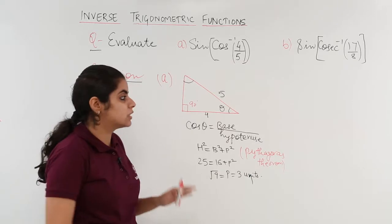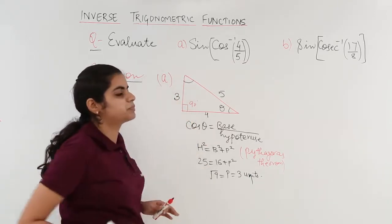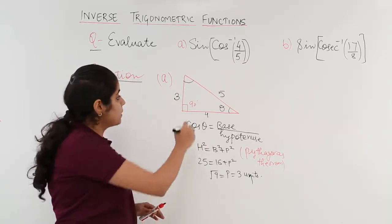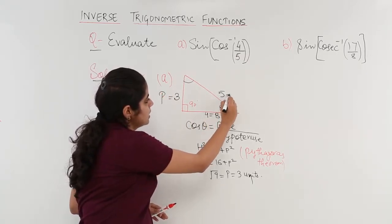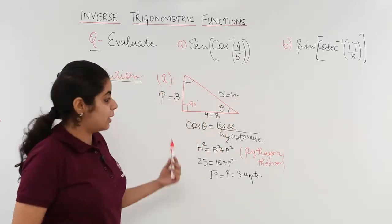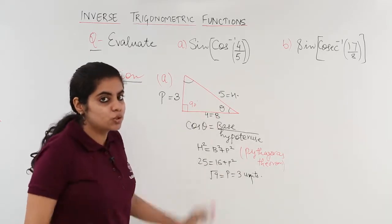So, since it is 3 units, 3 is the side here. Now, 3 becomes my perpendicular, 4 becomes my base, 5 becomes my hypotenuse as you can already see the whole story on the board.